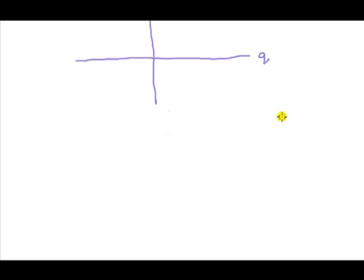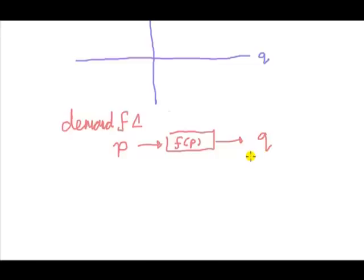When we're dealing with equilibrium, we need to consider four functions. First of all is something called the demand function. The demand function is a function such that if you tell me what the price of the good is, feed that into the function f, and it will tell you what the quantity demanded will be.